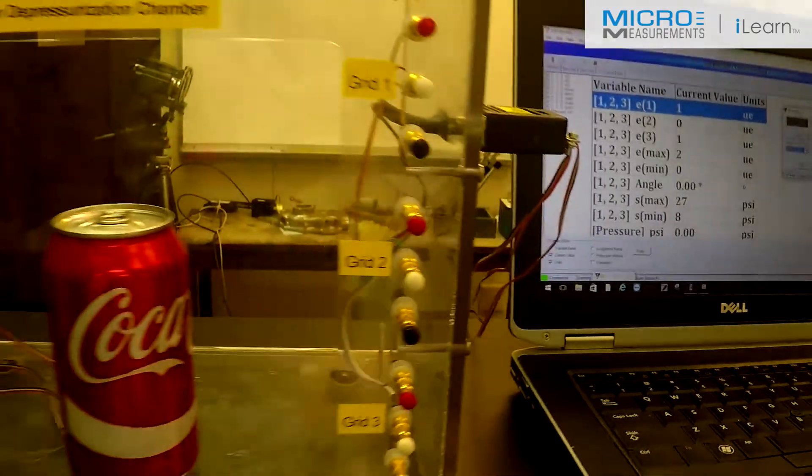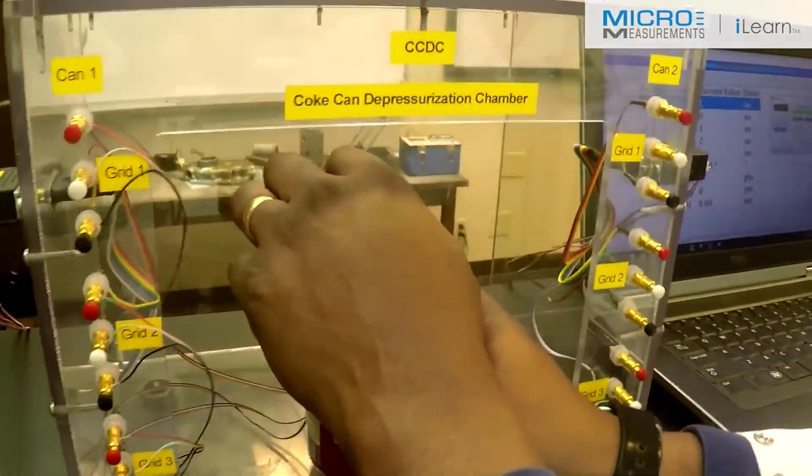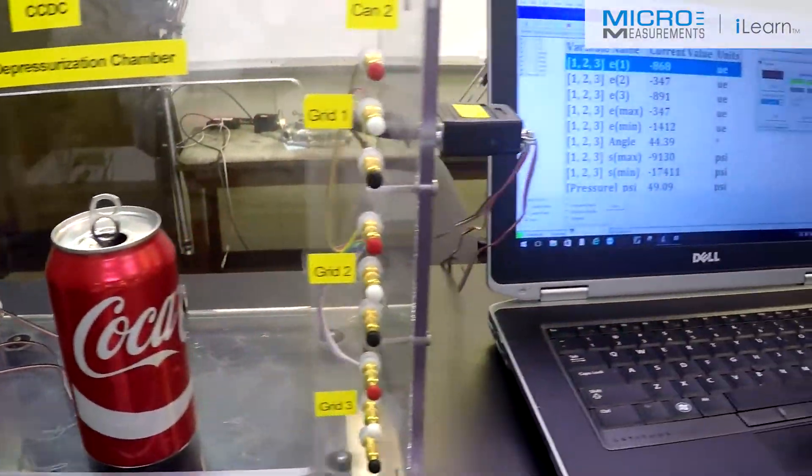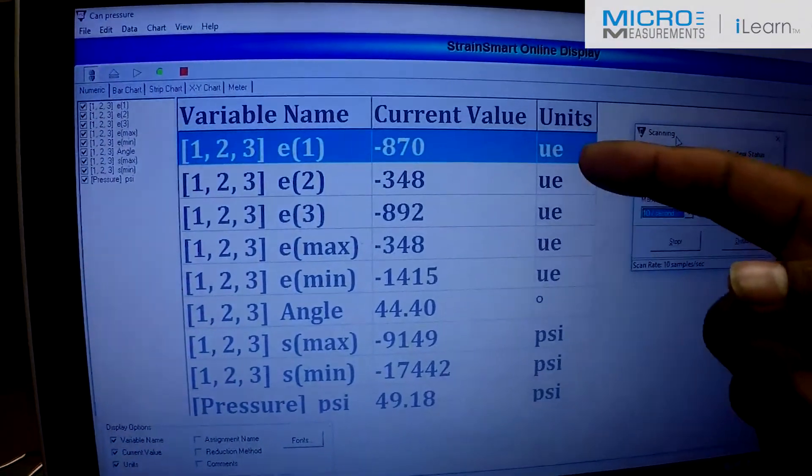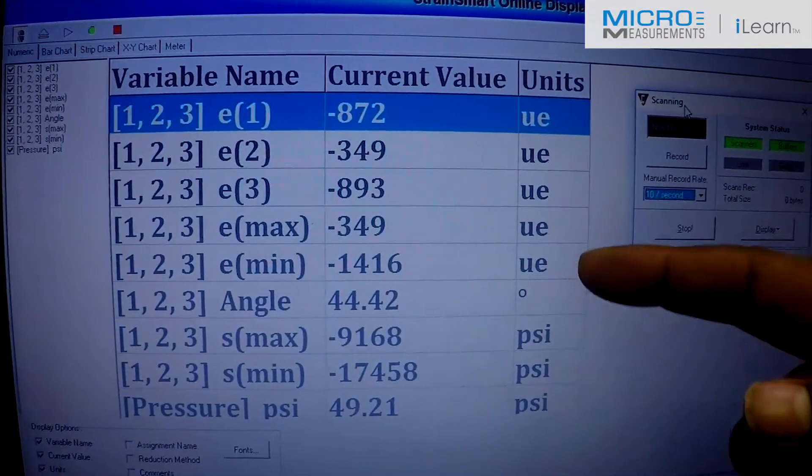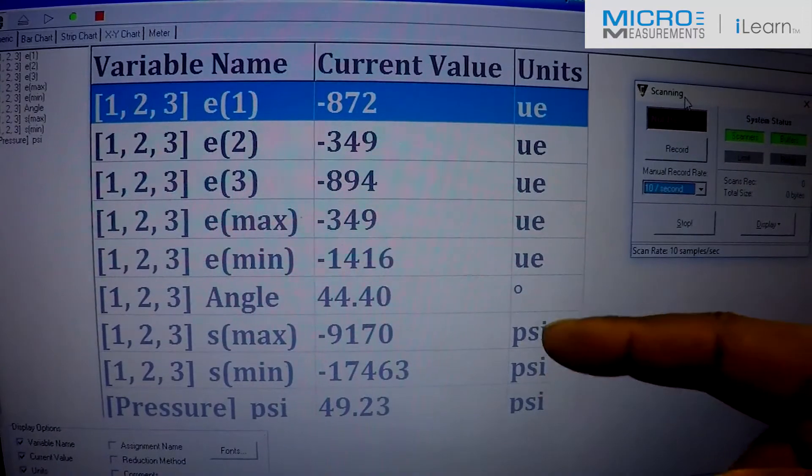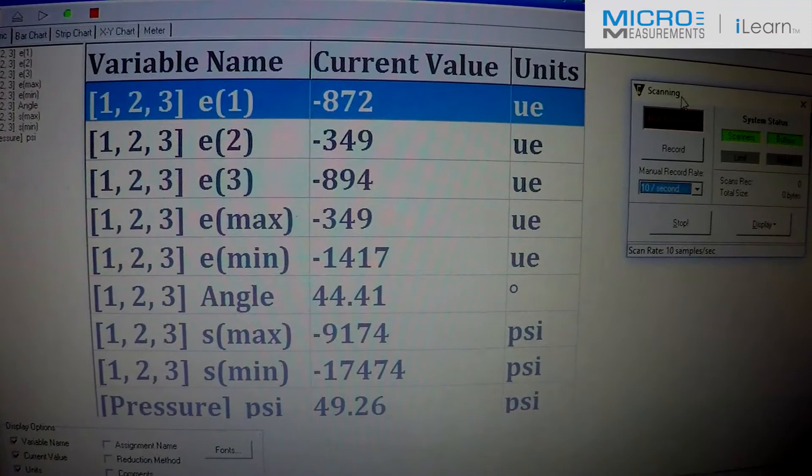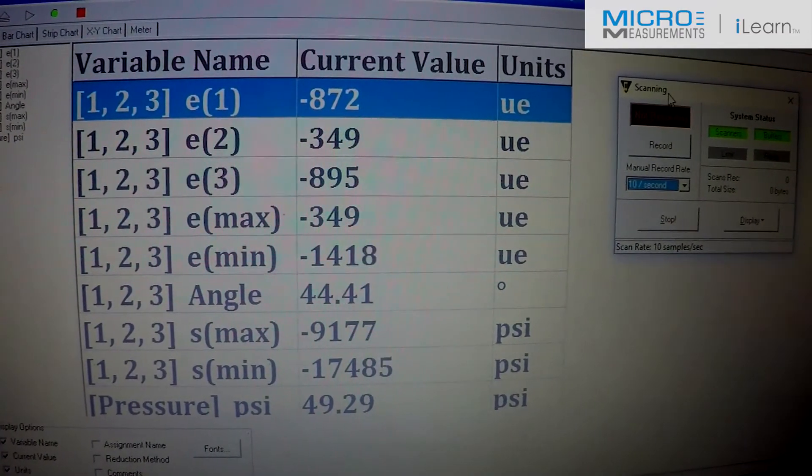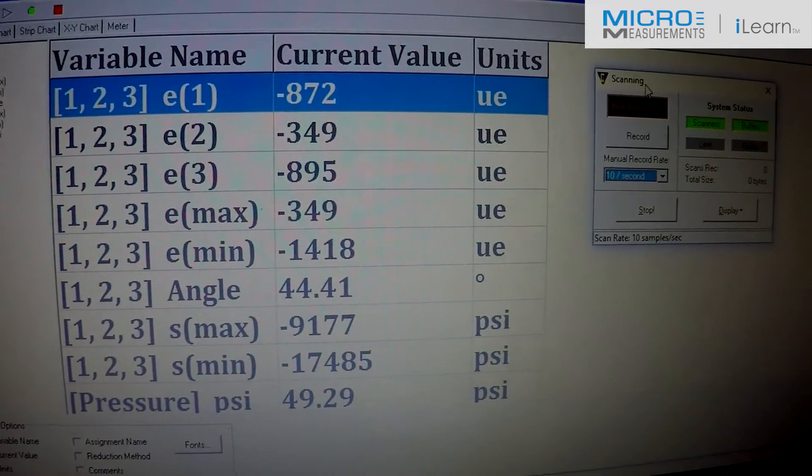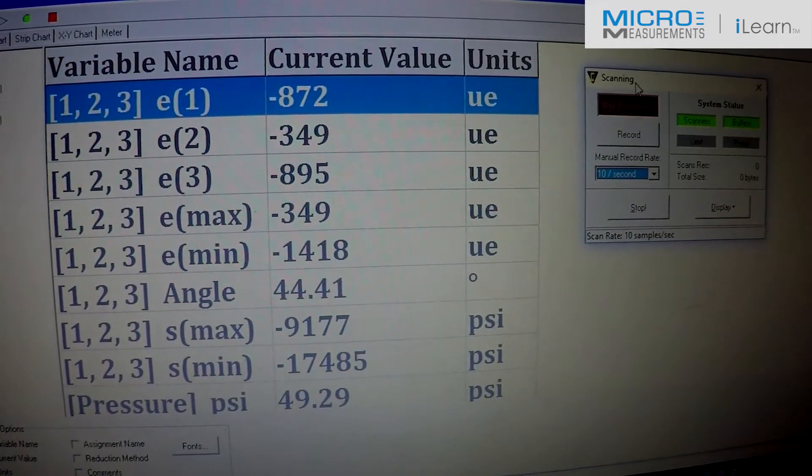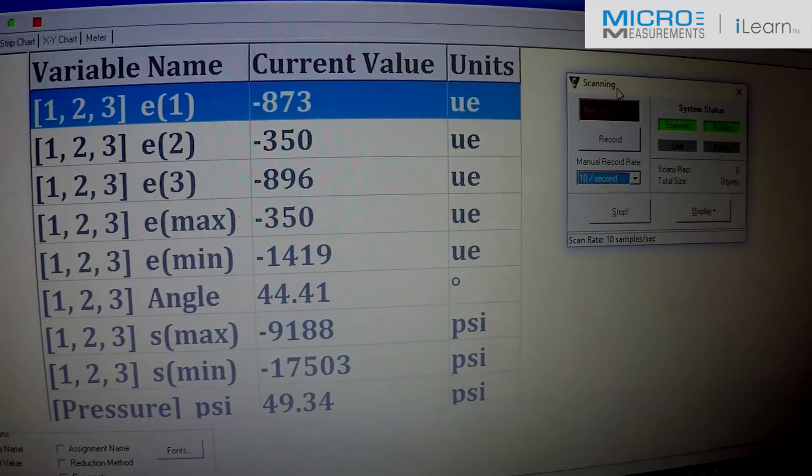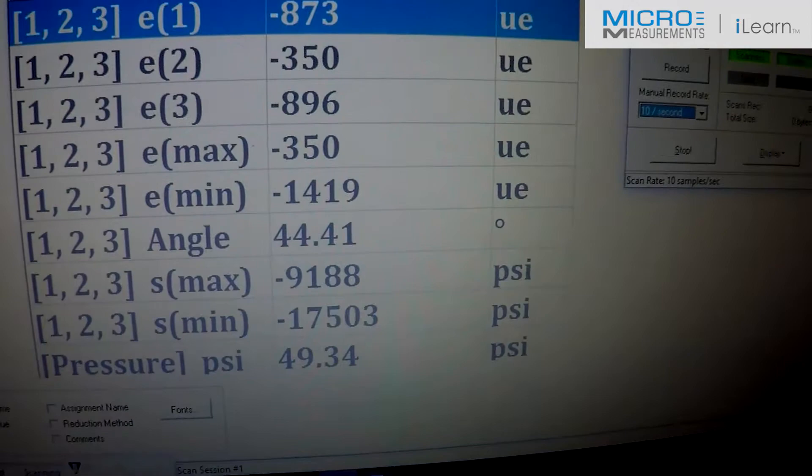So all I need to do is pop the top on this to depressurize the can. And now we can clearly see the raw strains as well as the principal strains and ultimately the principal stresses. Surely we can see that there's a 2 to 1 relationship between the maximum and minimal principal stresses. And the angle relative to grid 1 is about 45 degrees. This is what we expect. And our pressures normally fall around 45 to 50 psi, so we're right in the right realm of that particular reading.